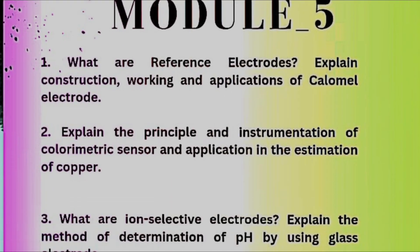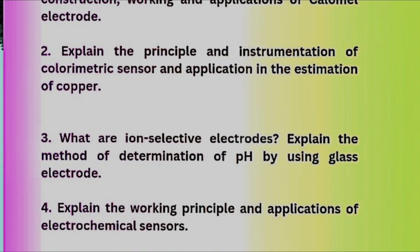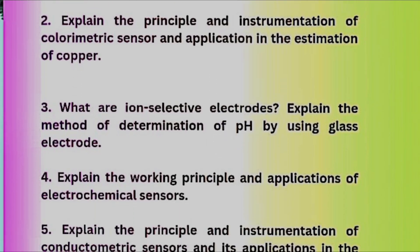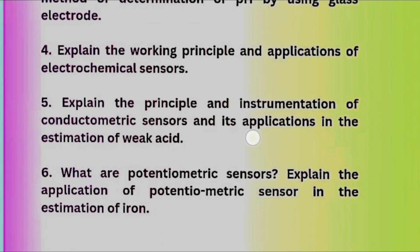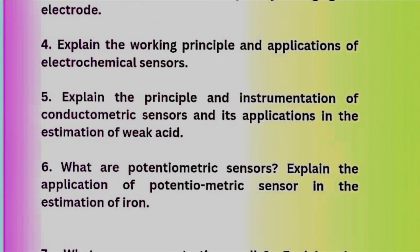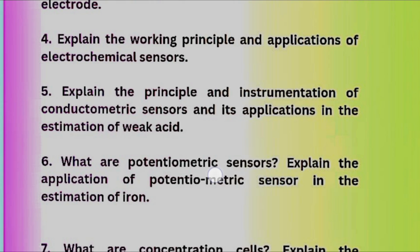Now we have Module 5, the last module. What are reference electrodes? Explain the construction, working, and application of the calomel electrode — this may be a 10-mark question and is again a super important one. Next: explain the principle and instrumentation of a colorimetric sensor and its application in the estimation of copper. And: what are ion-selective electrodes? Explain the method of determination of pH by using a glass electrode. And explain the working principle and application of electrochemical sensors.